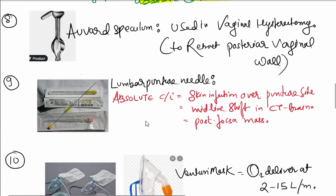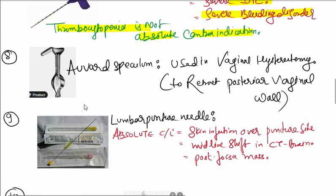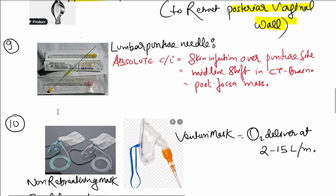Next, this instrument is a Ward speculum. Ward speculum is used for vaginal hysterectomy to retract posterior vaginal wall.